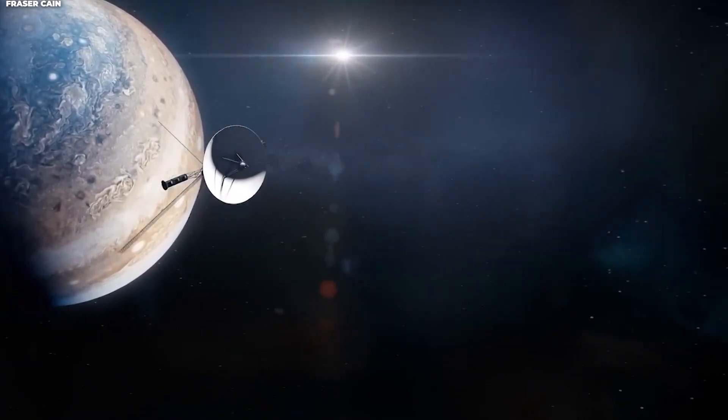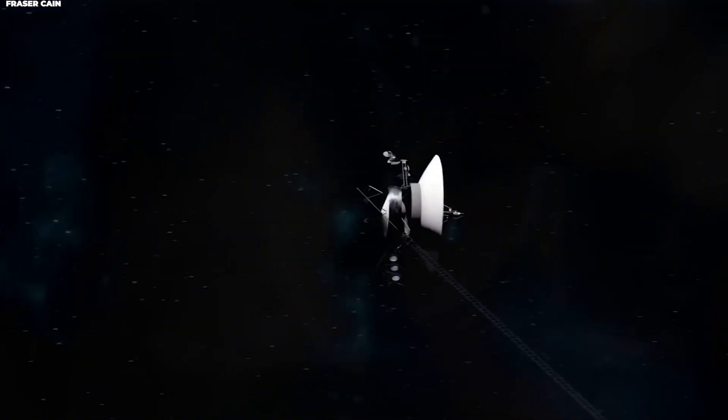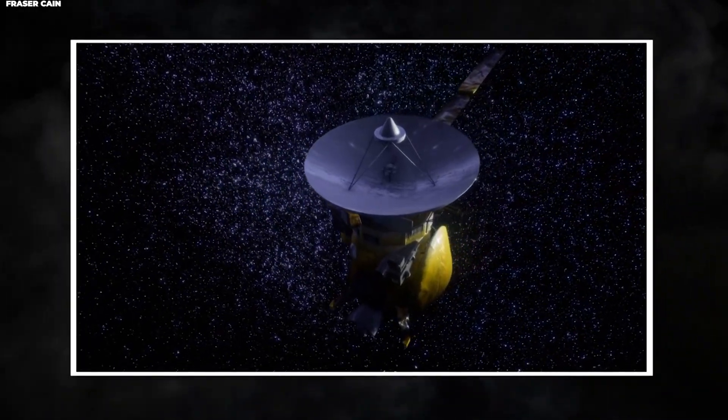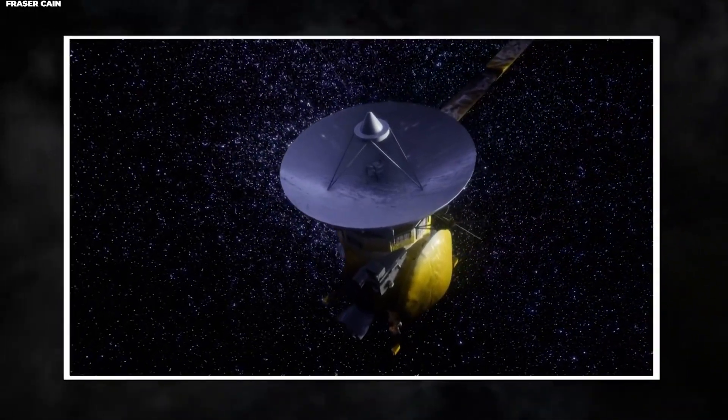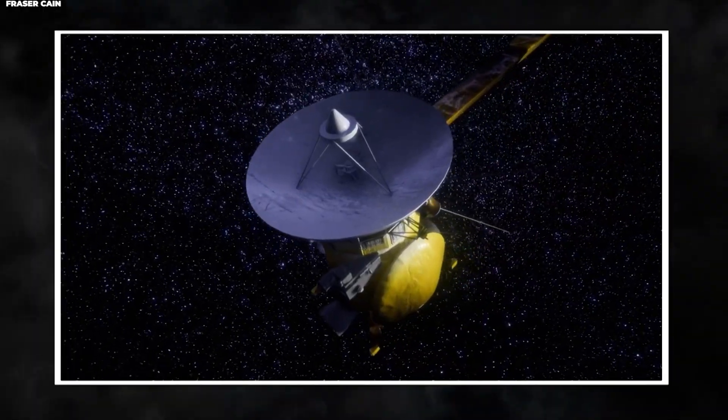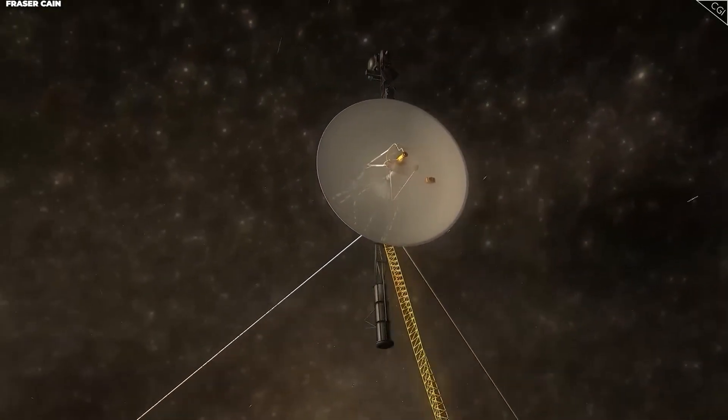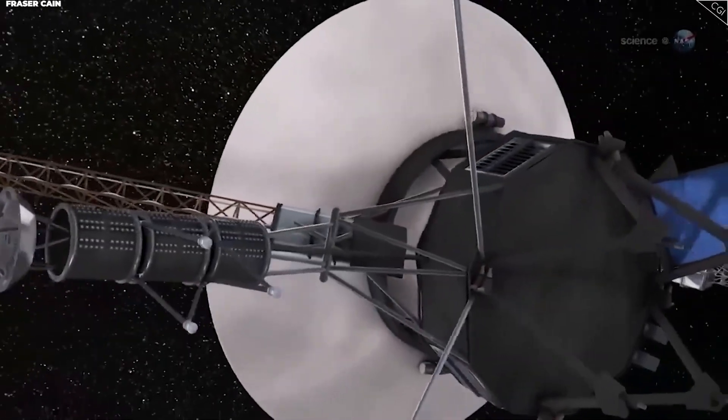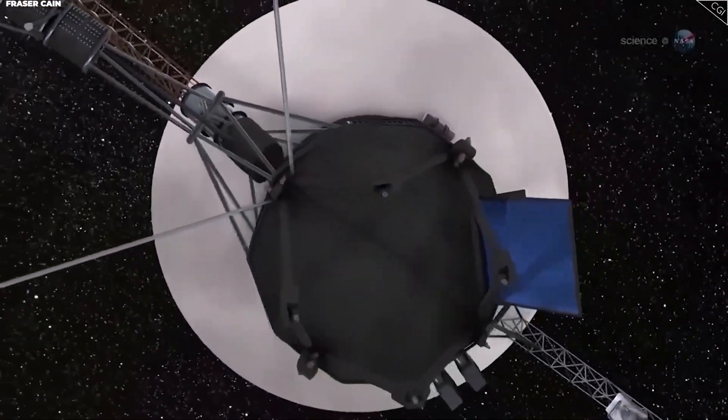The mission was supposed to last just five years. But here's the incredible part. Voyager 1 didn't just complete its mission and die out there in space. It kept going, and going, and going. Today, nearly five decades later, Voyager 1 is still operational and is officially the most distant human-made object in existence.